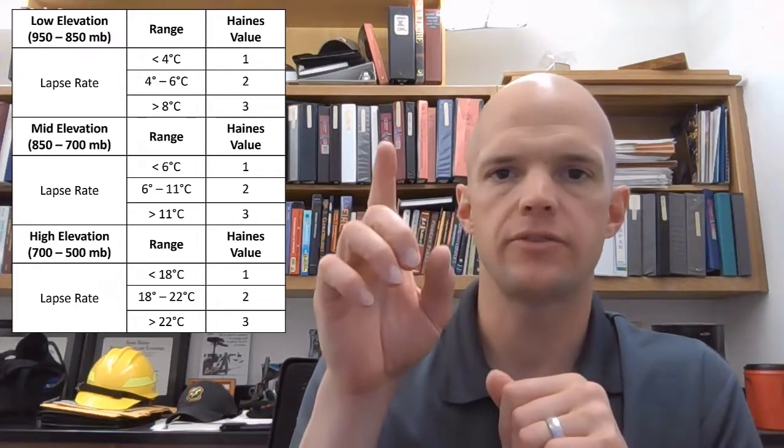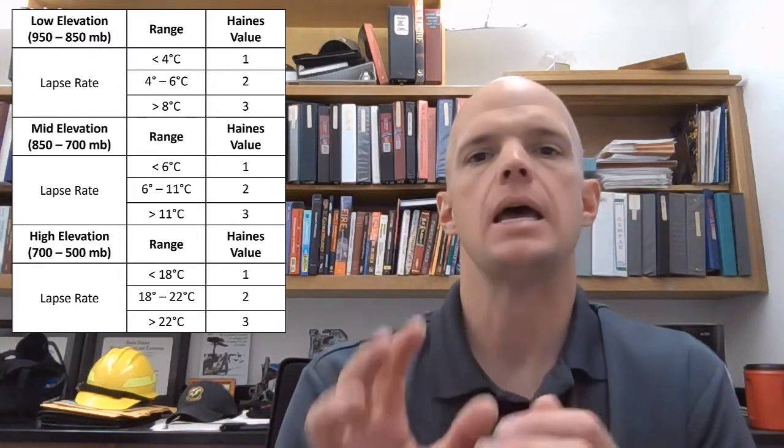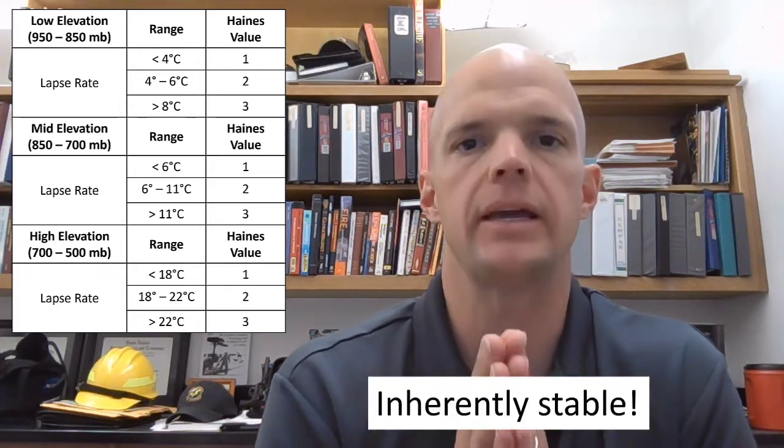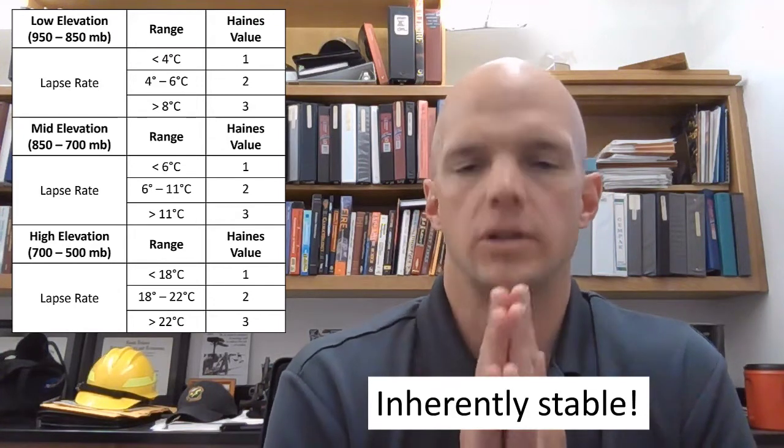And that's really important because if you actually look at a temperature lapse rate of 8 degrees for the low, 11 degrees for the mid, or 22 degrees for the high elevation index, and you plot it on a thermodynamic diagram, and I encourage any meteorologist to do that who's watching this, you will see that that lapse rate is inherently stable. It is not unstable whatsoever, which is an interesting point.